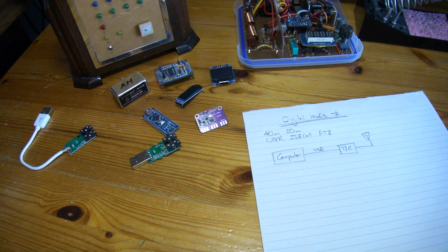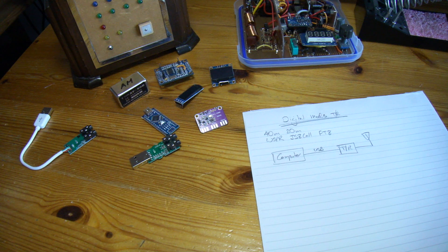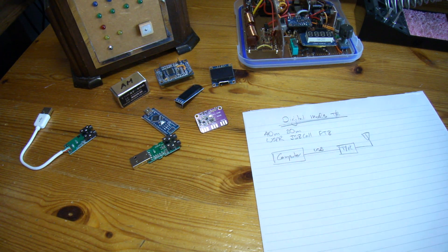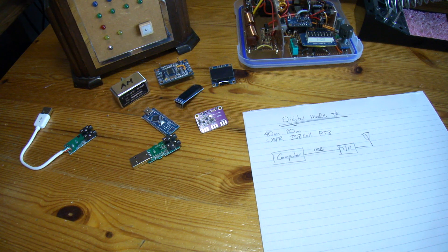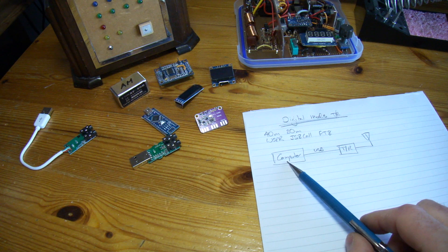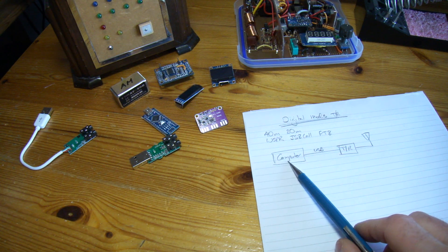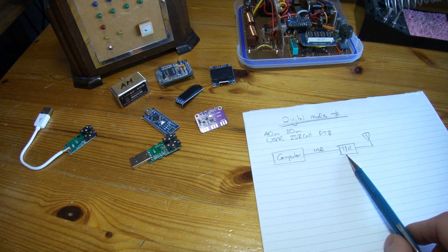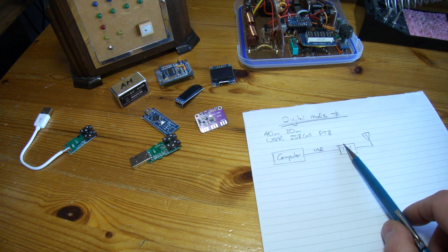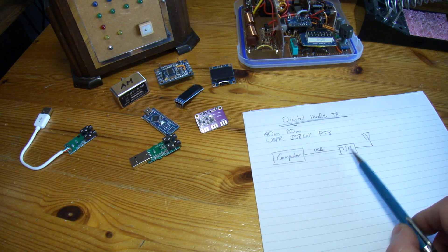G'day it's Charlie ZL2 CTM. Well it's time to build another project and what I would like to build is a very simple digital modes transceiver. What I mean by simple is that I want to utilize the computer to do all the computations for the particular mode. I'm not looking to implement in the transceiver itself any kind of SDR or any other kind of logic in that respect.